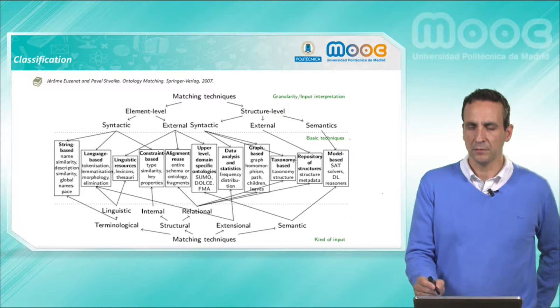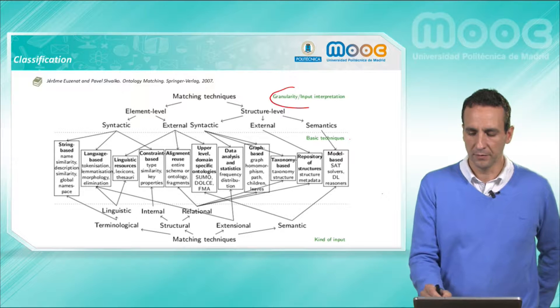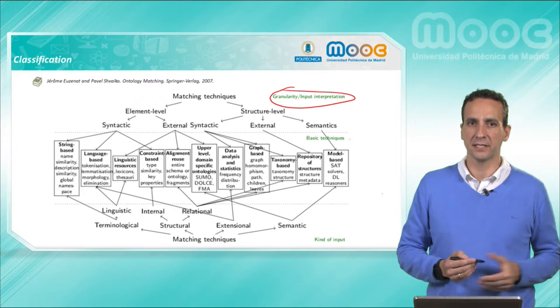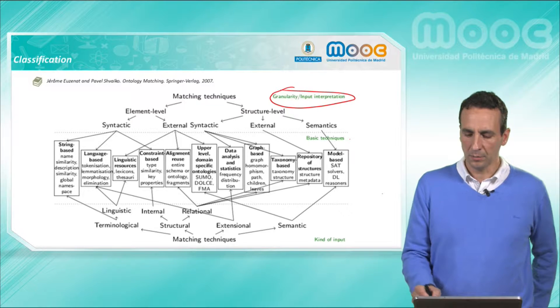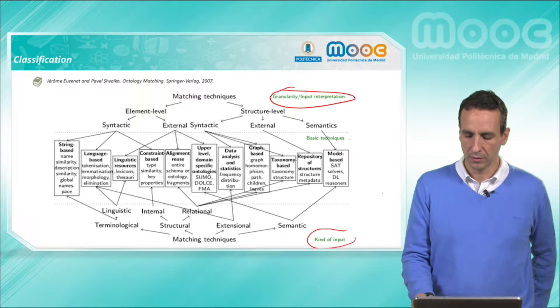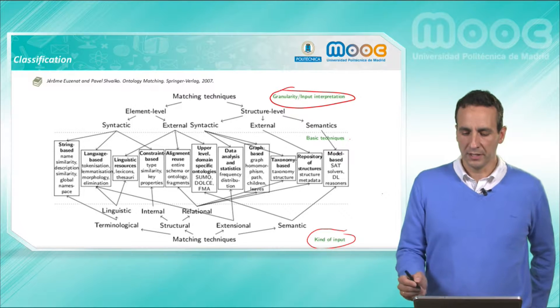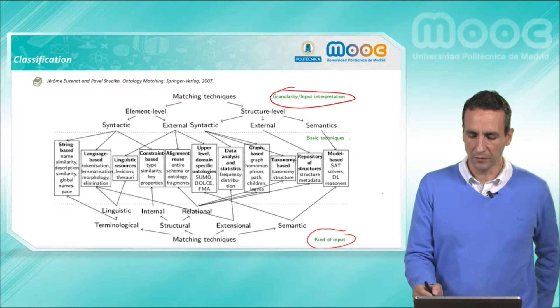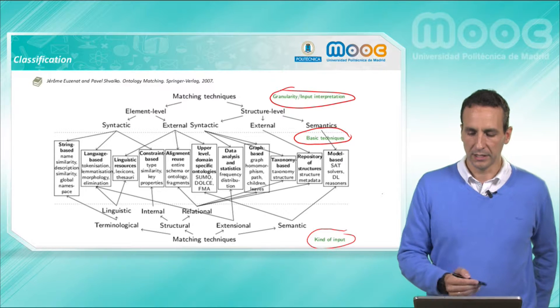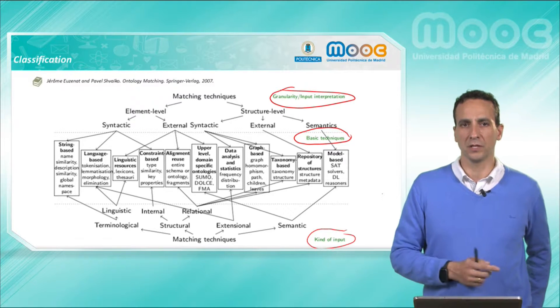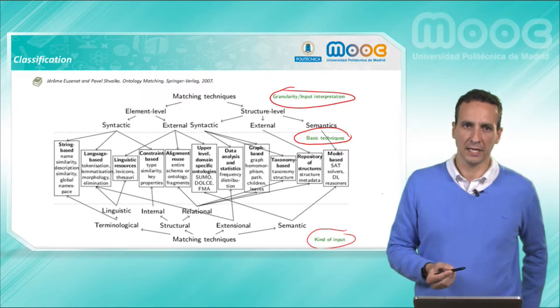The first one based on the granularity level of the matching system, another one based on the kind of input used by this matching system. What we can see in the medium of the figure is the set of basic techniques that these two possible classifications try to organize.